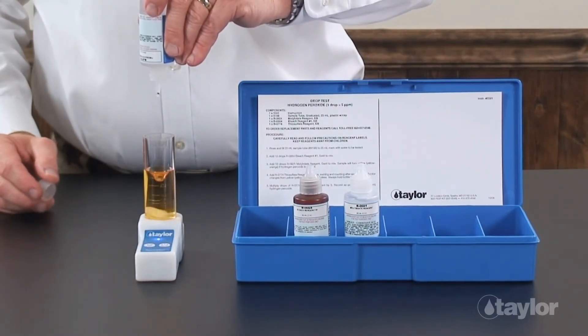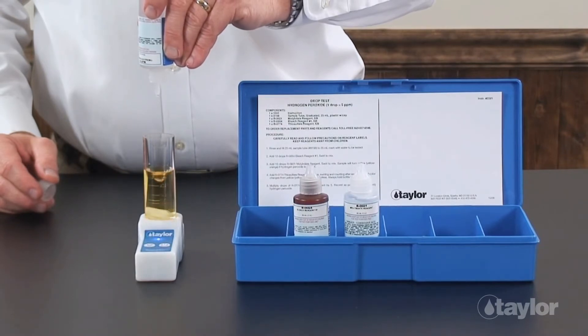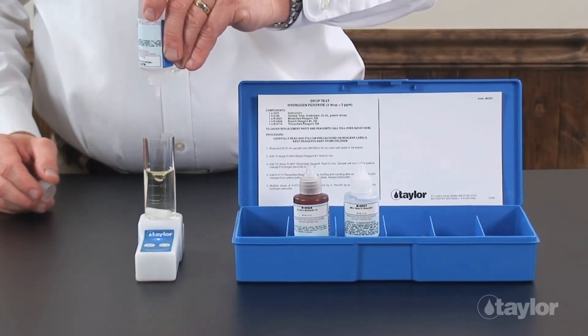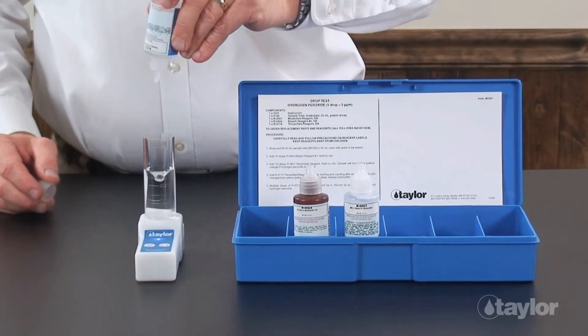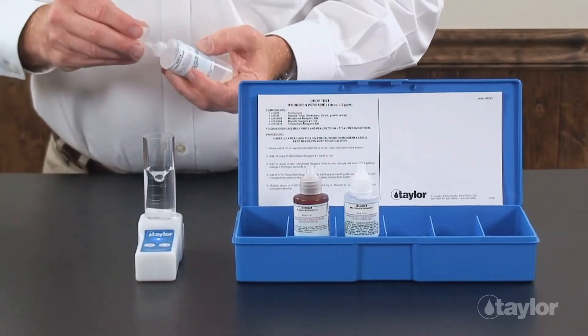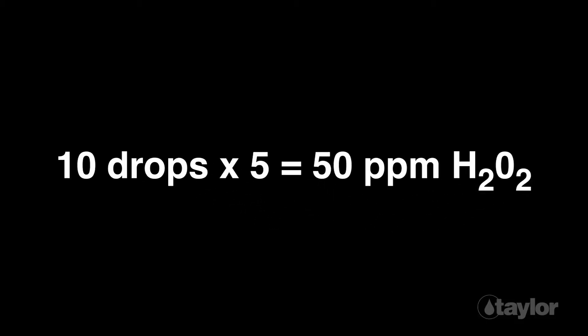Multiply the number of thiosulfate reagent drops used by five and record as parts-per-million hydrogen peroxide.